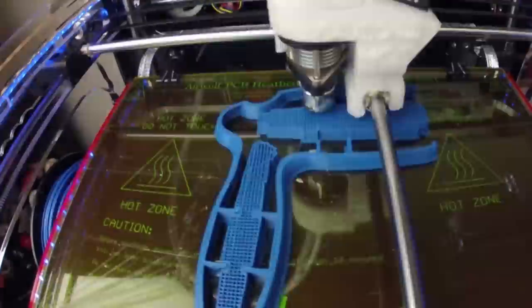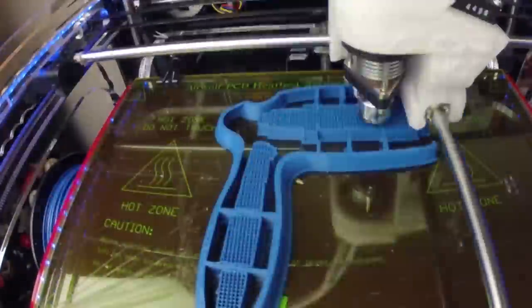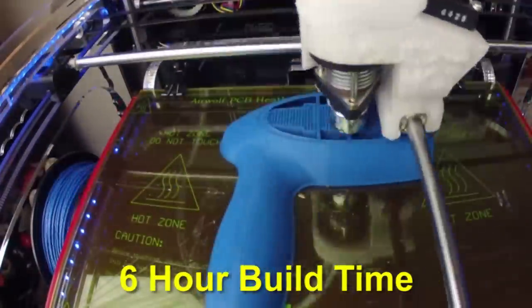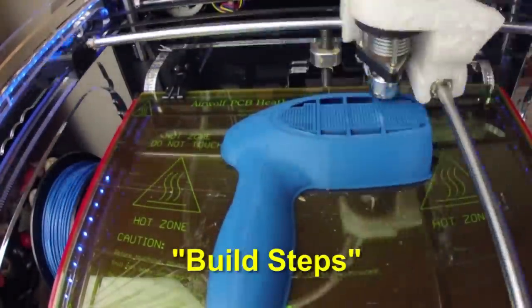So how long did it take to print this particular part? We printed this on our FDM system. It took roughly six hours to print. This part has steps and will need to be sanded and filled.